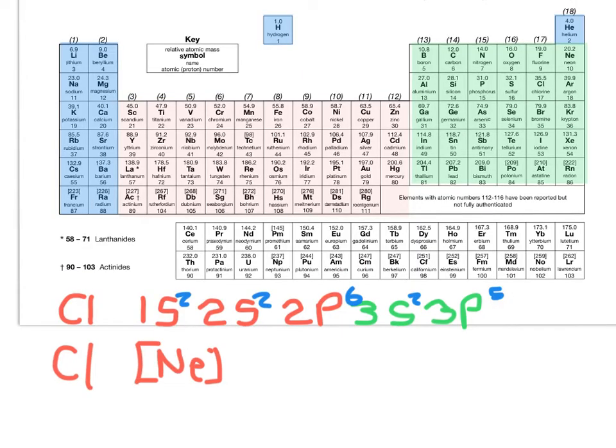So to do the shorthand method, what you do is you write square brackets neon. And all these ones in red, the square brackets neon represents all of these ones in red. So we don't need to write these ones in red. All we have to do is write the ones in green. So rather than writing out the full electronic configuration of chlorine, I can just write square brackets neon, 3s2, 3p5.